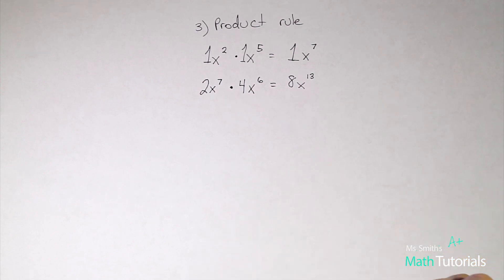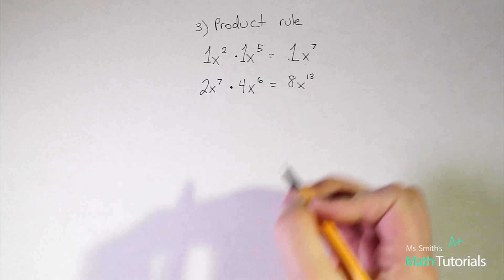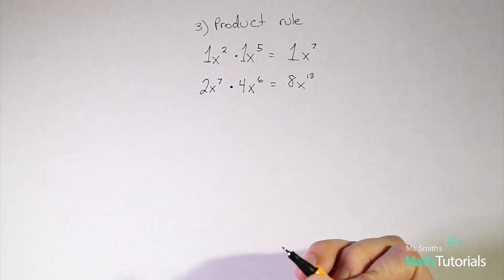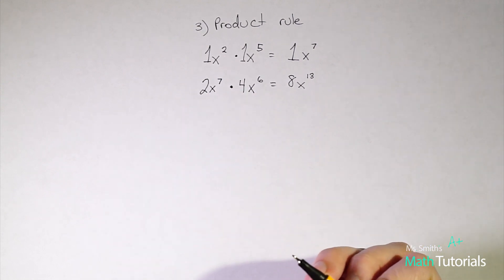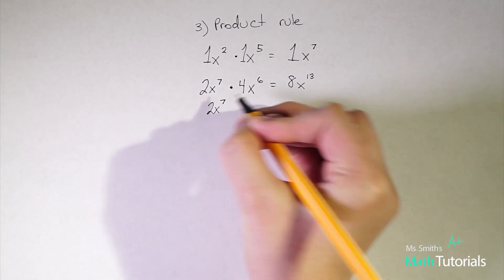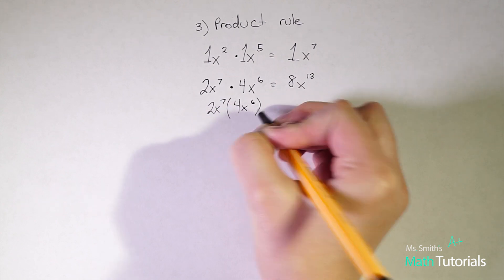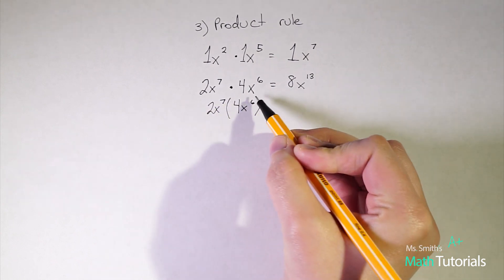It's important to note that once we get into high school math, we really don't use this dot a whole lot anymore. We do every now and again and it's important to recognize it. But typically a problem like this we would write as 2x to the seventh times 4x to the sixth.